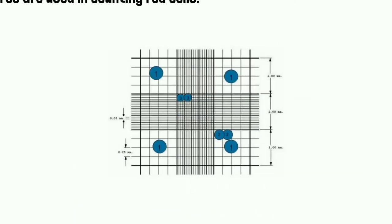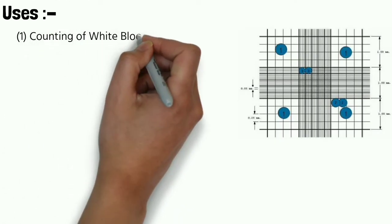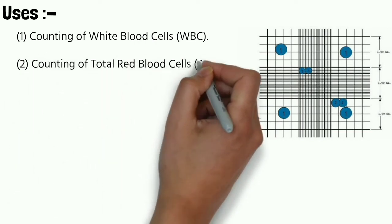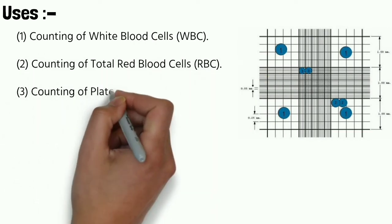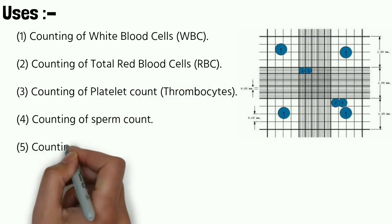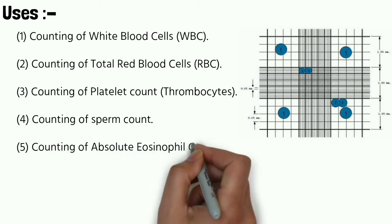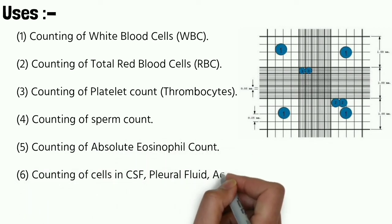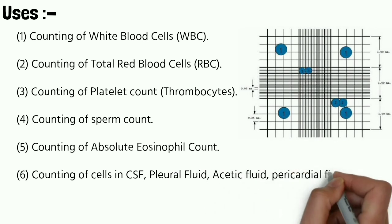Uses of Newbourg chamber include counting white blood cells (WBC), counting total red blood cells (RBC), counting platelets or thrombocytes, counting sperm count, counting absolute eosinophil count, and counting cells in CSF, pleural fluid, ascitic fluid, pericardial fluid, etc.